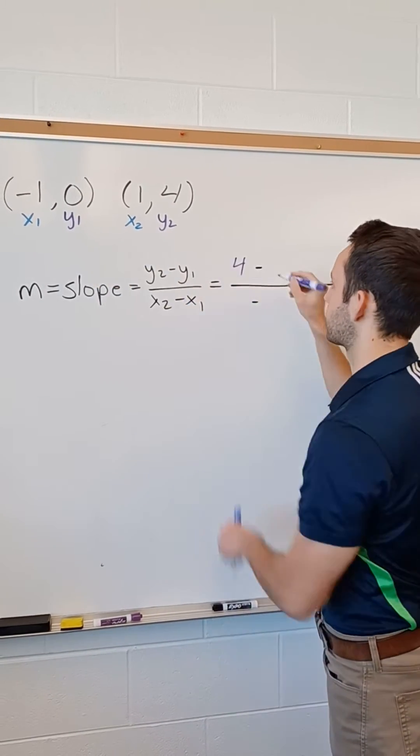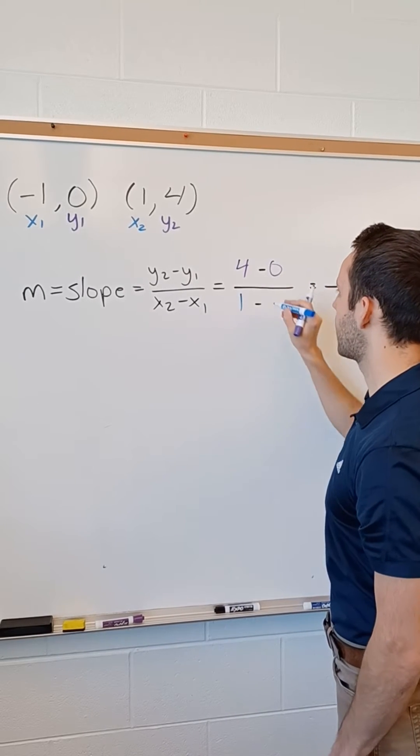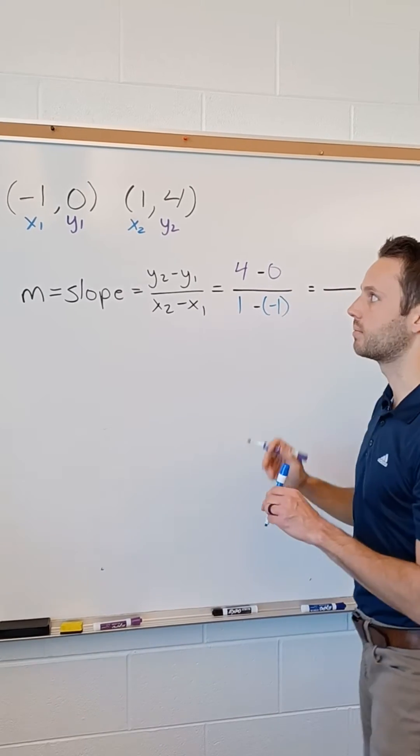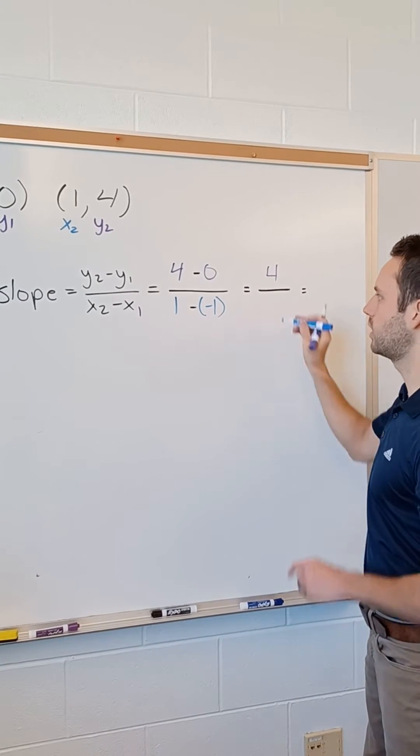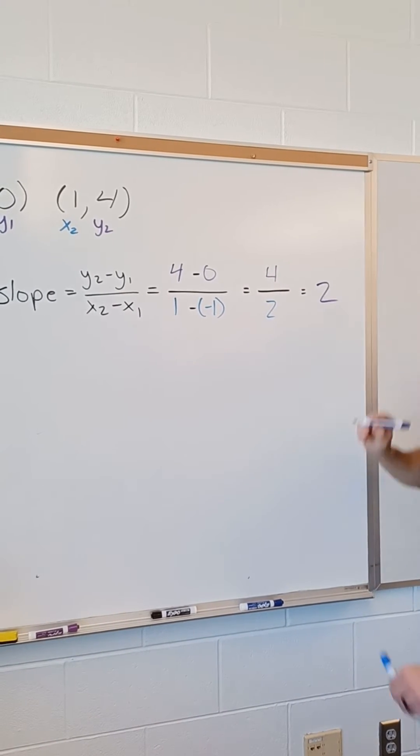So that gives us four minus zero in the top, and one minus a negative one in the bottom. Let's simplify. Four minus zero, four. One minus negative one, two. Simplify further. Our slope equals two.